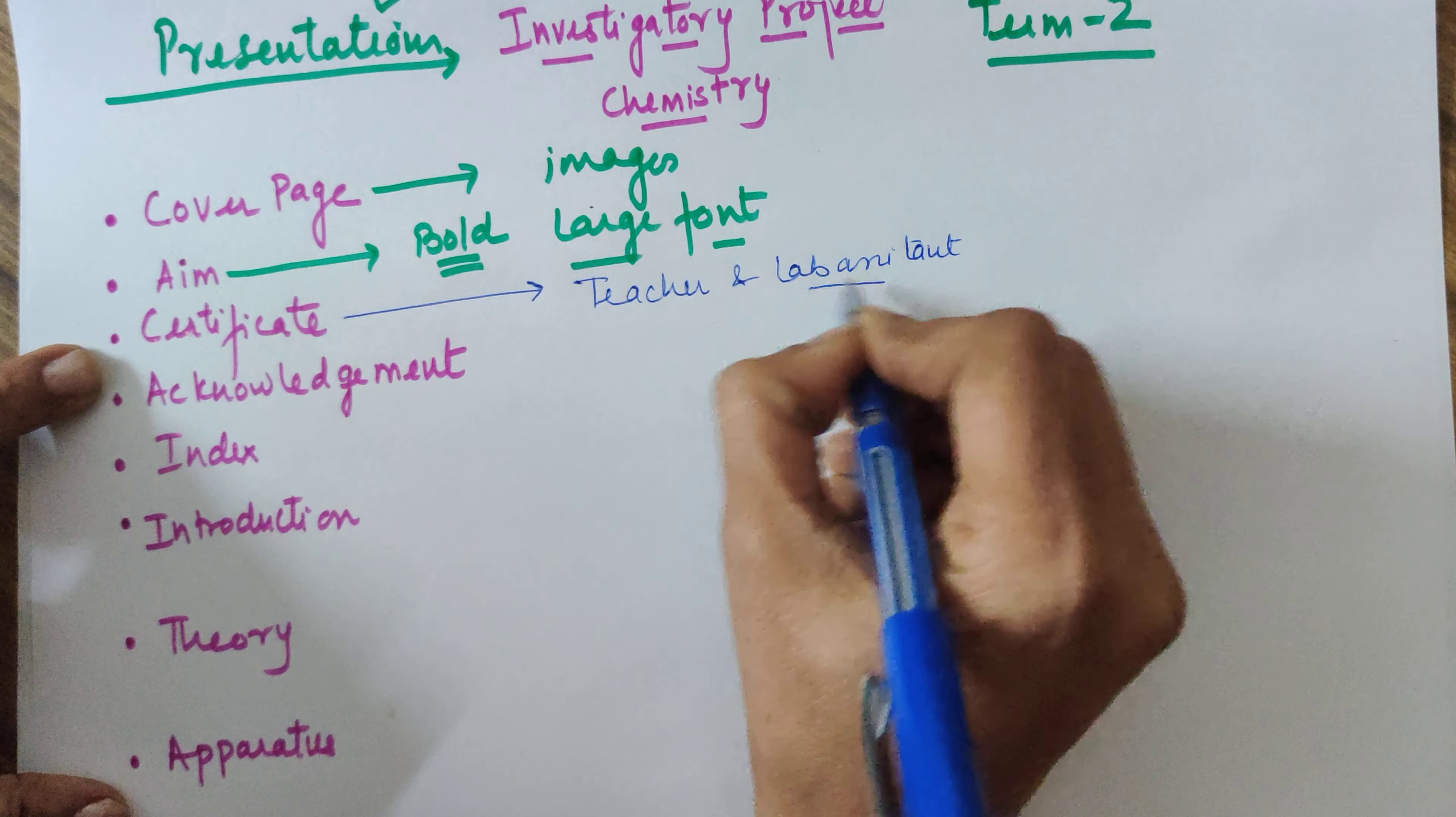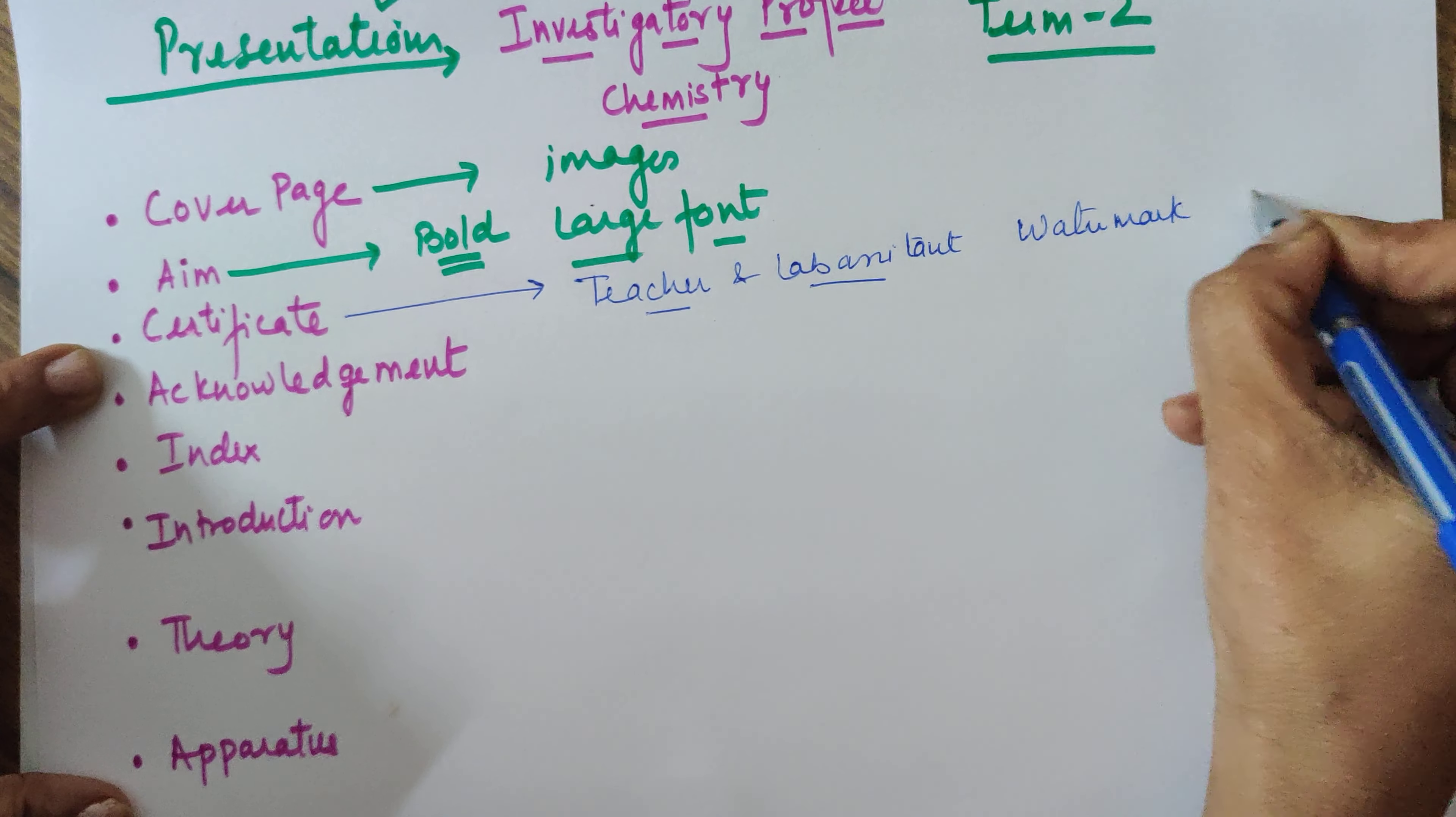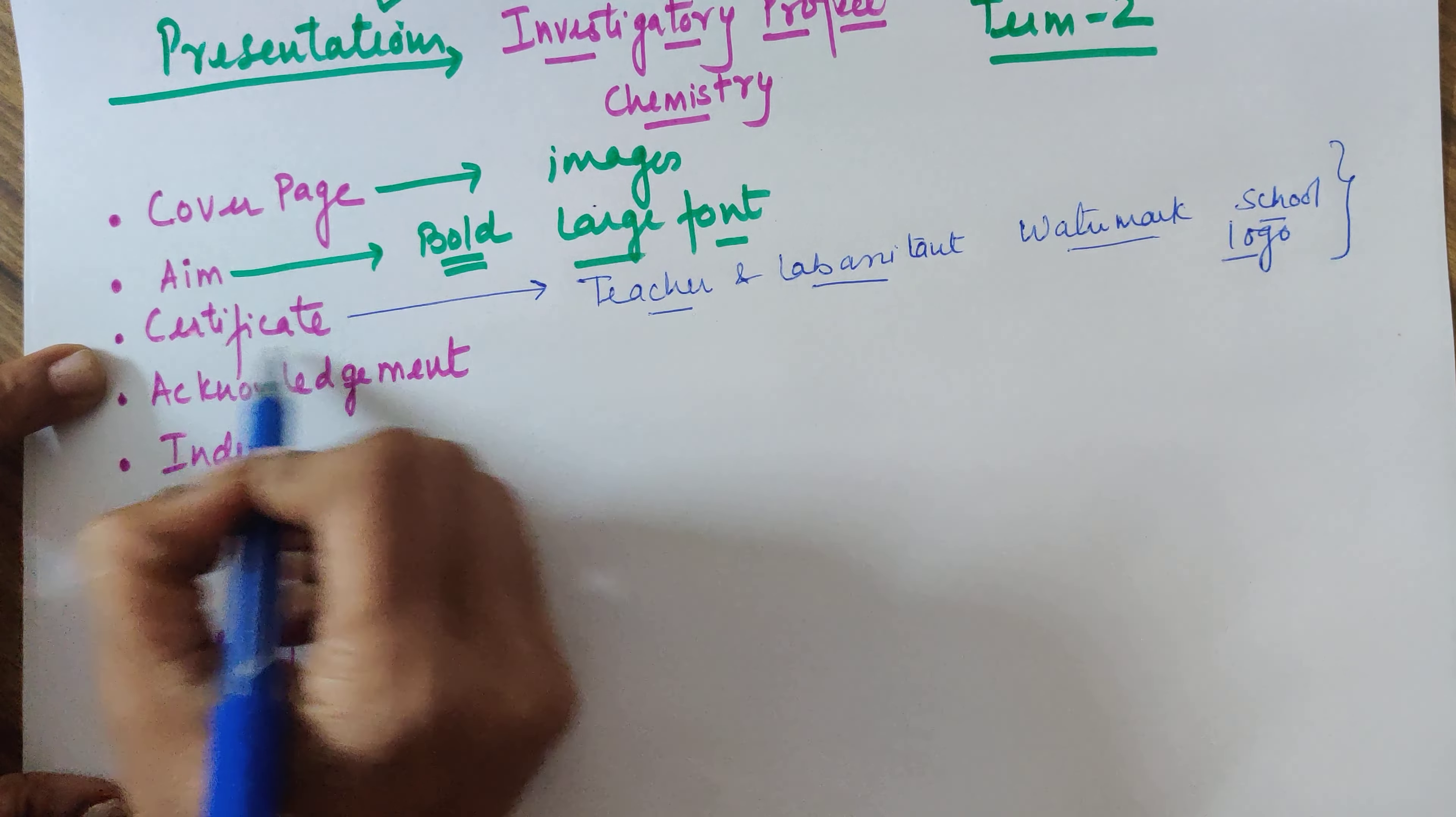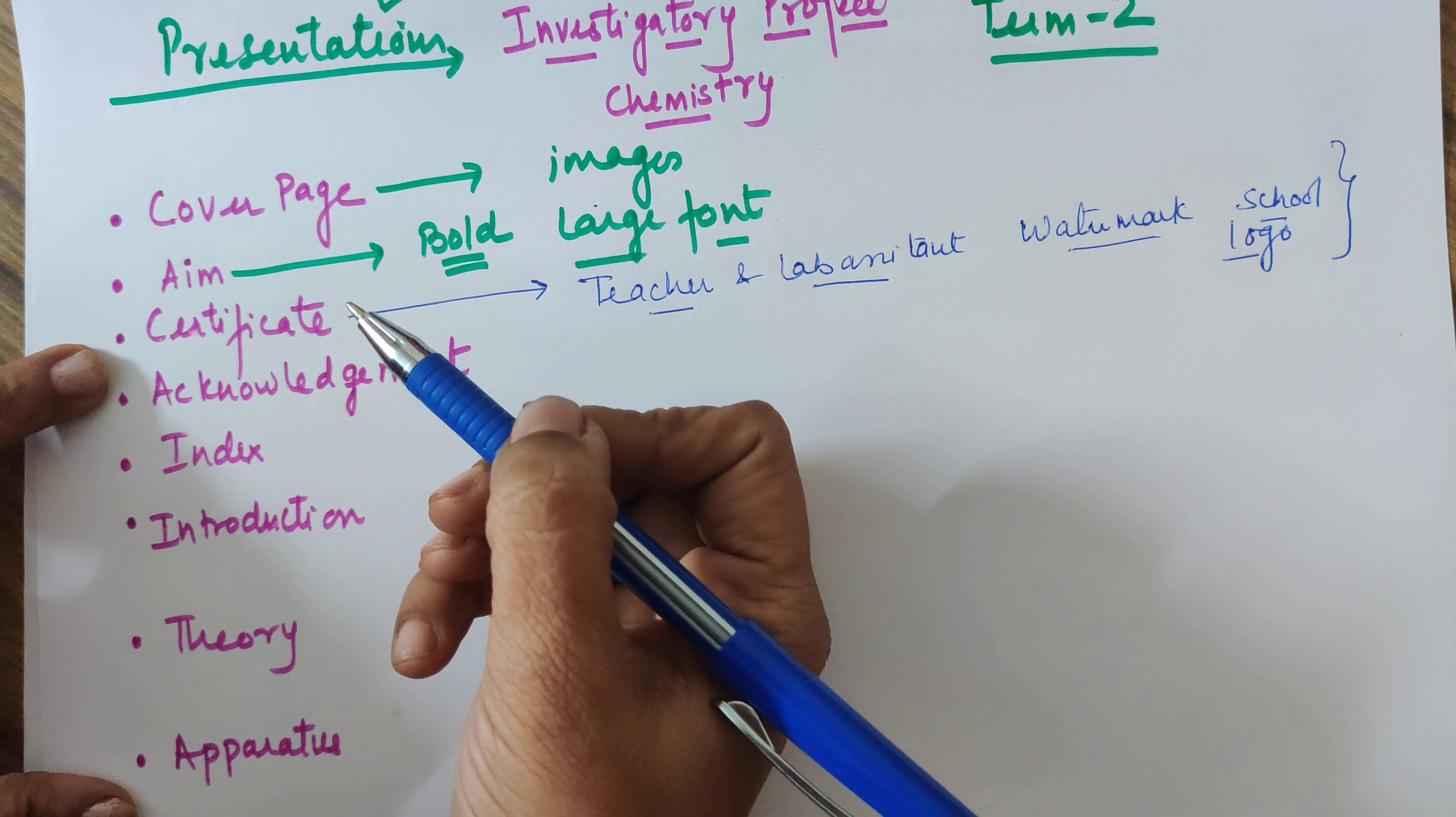Both have to sign, so at the bottom their names and space for signature has to be mentioned. In this certificate document, if you can have a watermark of your school logo it would be good but not essential. You can even use your letterhead of the school at times. This certificate is to be signed by your teacher where the teacher is saying that yes, this work is original and the student of our school has done it under my supervision.